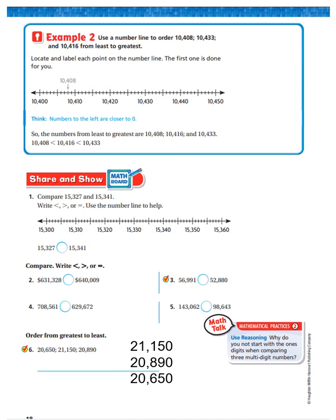Let's look at example two. It says, use a number line to order 10,408, 10,433, and 10,416 from least to greatest. Locate and label each point on the number line. The first one is done for you. So they've put in 10,408.